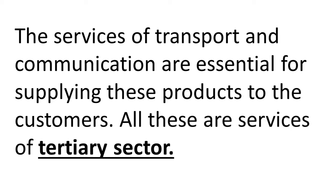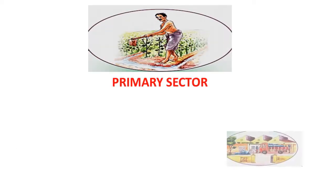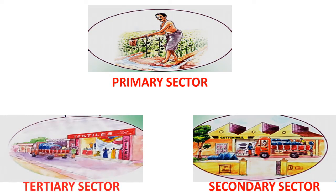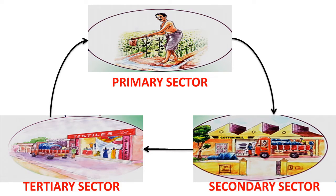All these are services of the tertiary sector. Children, look at the picture — the picture shows the interrelation among these sectors. Primary sector to secondary sector, secondary sector to tertiary sector, tertiary sector back to primary sector. Economic growth takes place when primary, secondary, and tertiary sectors function together as a board.